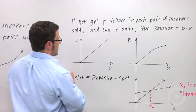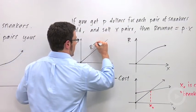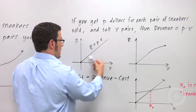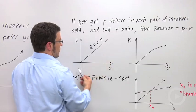And the revenue function could look like this. R equals P times X. If the price is constant, you'll just have this linear function for your revenue.